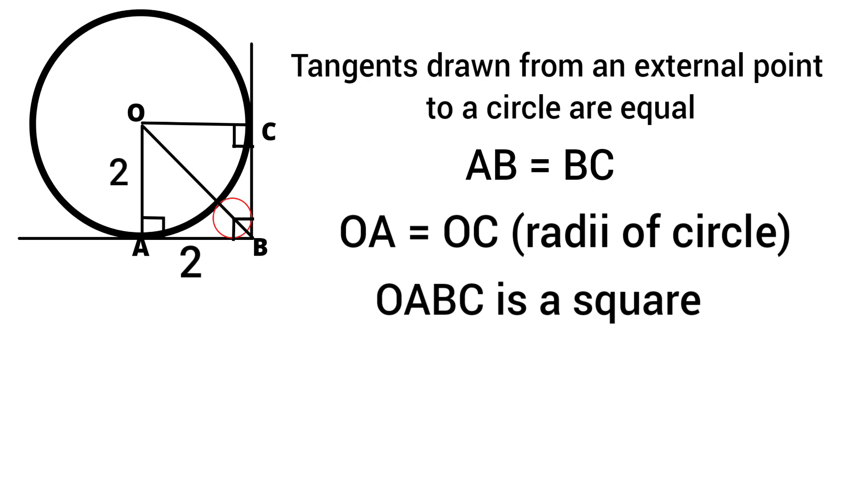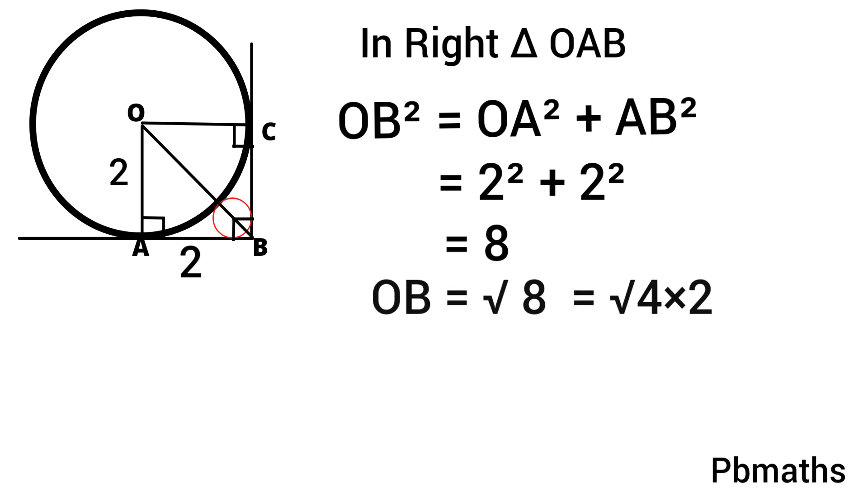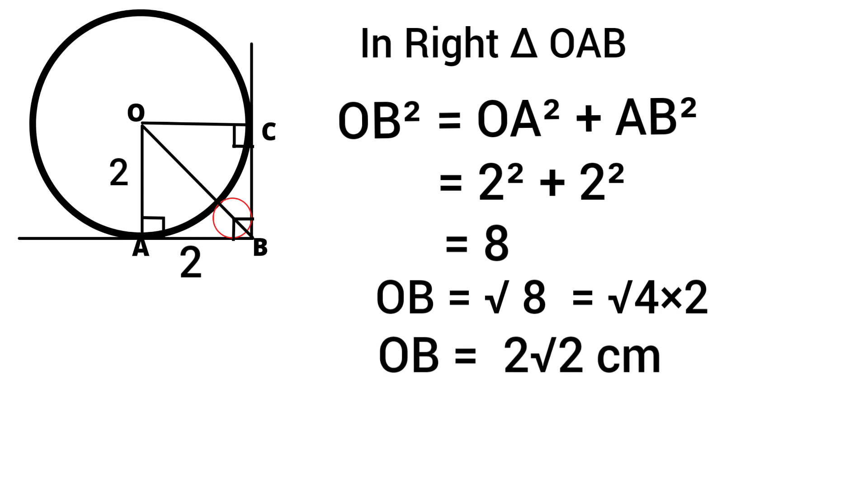Now we can easily find out the hypotenuse OB value. By Pythagoras theorem, we can write in right triangle OAB, OB² equals OA² plus AB², which equals 2² plus 2², which equals 8. Then the value of OB is √8, that could be written as √(4×2). Therefore, length of OB equals 2√2 cm.